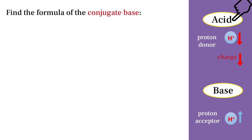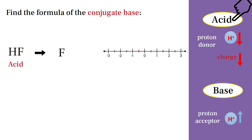In the first example, HF is an acid, so it will donate a proton, which means the number of its hydrogen atoms will decrease, and fluoride will be produced. To determine its charge, we will use the line number. Since HF has zero charge and it is an acid, it will donate a proton and its charge will decrease — it will acquire one negative charge, forming the fluoride ion F⁻.